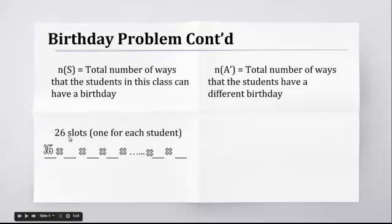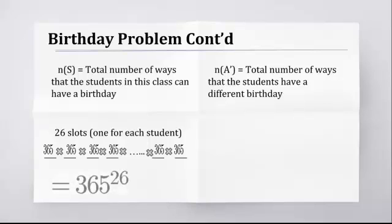How many ways can the second person have a birthday? And so you say, well, is there any problem with having the first person? It has nothing to do with that. It's 365. The third person is 365. The fourth person is 365. The 25th person is 365. And so if you think about that, how do you do that? How many number of ways you've got N of S equaling 365 to the exponent 26?